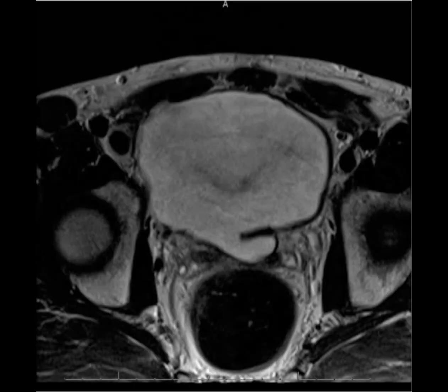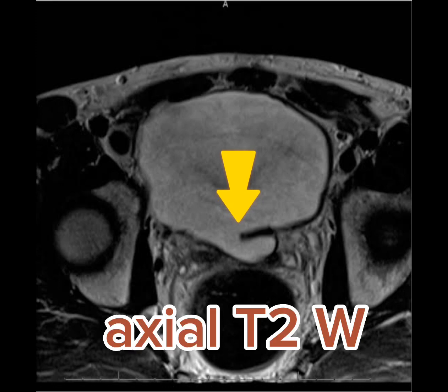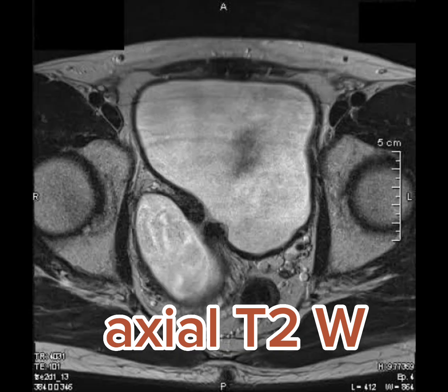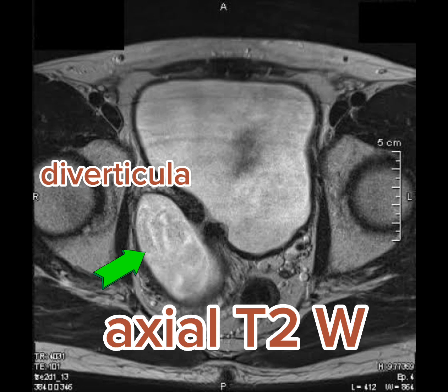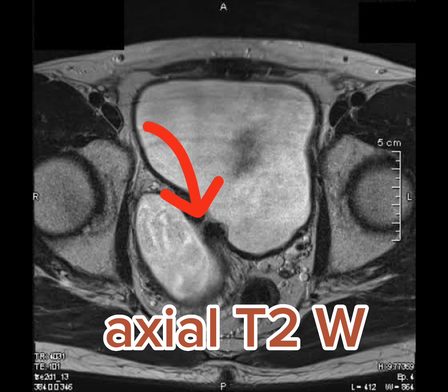Now we will see a few more examples of MRI of the pelvis showing diverticula. In this image we can see an axial T2-weighted sequence with a diverticula along the posterior wall of the urinary bladder. Another example of axial T2-weighted sequence shows a prominent sized diverticula from the right posterolateral aspect of the urinary bladder, with a very narrow neck clearly appreciable between the bladder and the diverticula.